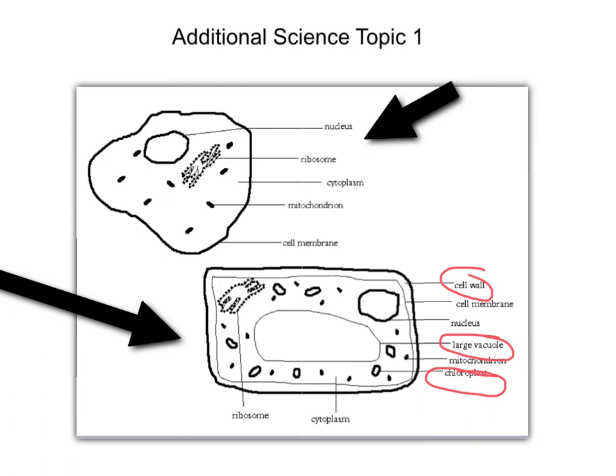It's important now at GCSE to get the terminology right, you need to be able to explain that DNA codes for proteins. So let's not be talking about characteristics here. It contains the code for all of the proteins that the cell makes. Then if we move on to the ribosomes, these are very tiny organelles. You can't see them with a light microscope at all, but they are responsible for making the proteins.